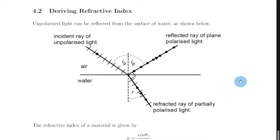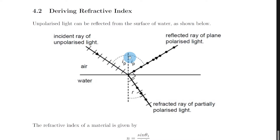Another way we can define Brewster's angle is in terms of the angle between the reflected and the refracted rays. When the reflected ray, which is fully plane polarized, and the refracted ray, which is partially plane polarized, have an angle of 90 degrees between them, then our angle of incidence is called Brewster's angle and it's given the symbol ip. The angle of incidence here is the same as the angle of reflection, because this ray obeys the law of reflection. So if this is ip the angle of incidence, then that angle must also be ip.